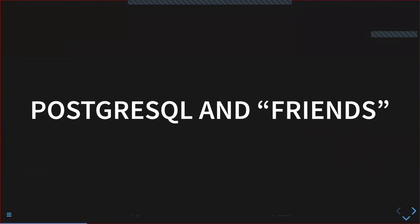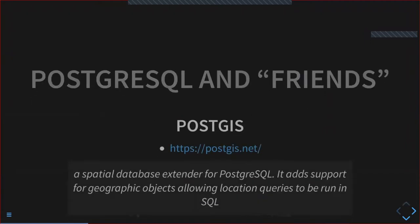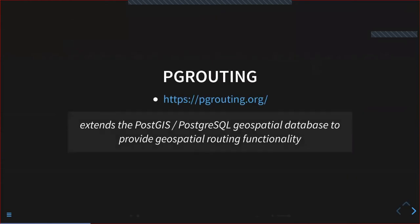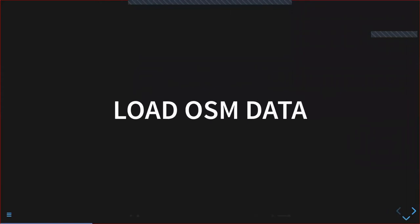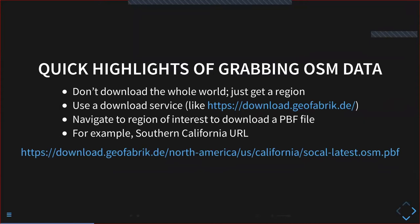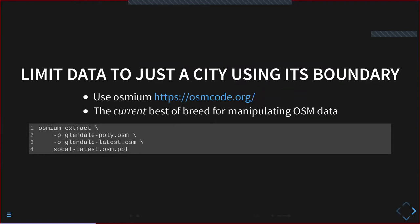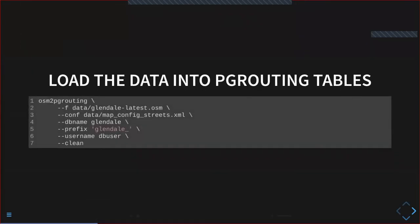I've been talking for about 10 minutes and just barely gotten to Postgres. I'm going to use PostGIS, which adds geographic capabilities to PostgreSQL, and pgRouting, which builds on PostGIS to add useful routing functions. The first step is loading the data. Don't grab the whole planet — it's terabytes. Instead, go to a download service and grab a small region. Even just grabbing SoCal is too big, so I use a tool called Osmium to cut it down by supplying a polygon defining the city of Glendale.